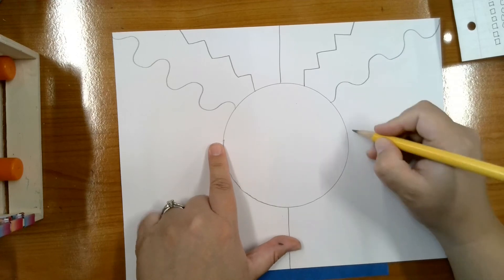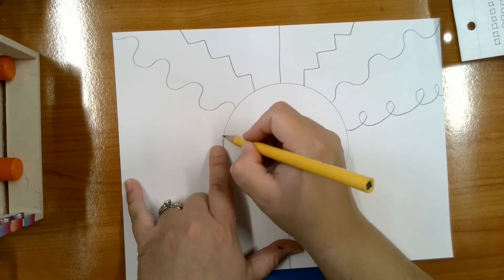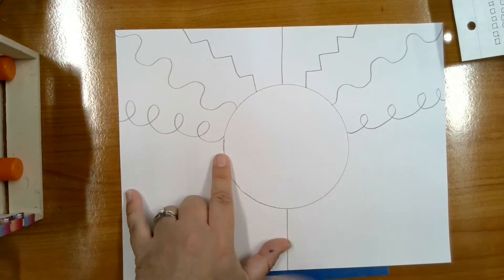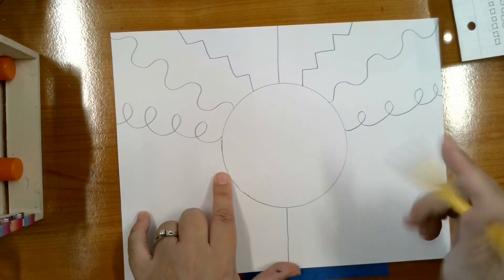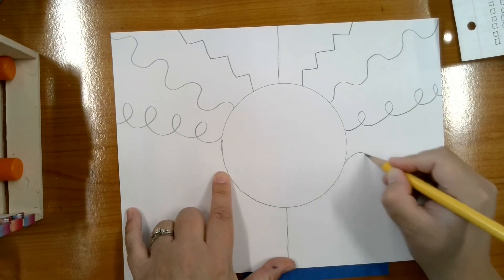Next, I'm going to do some curvy lines out on both sides. I'm going to come back down and around. I'm going to do a bumpy line.